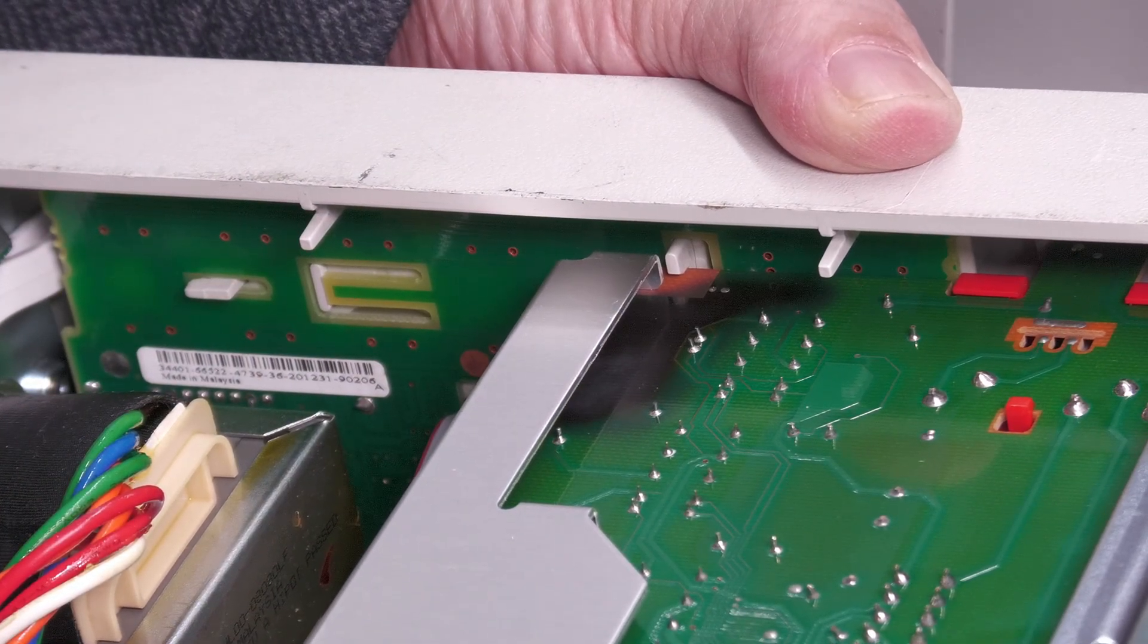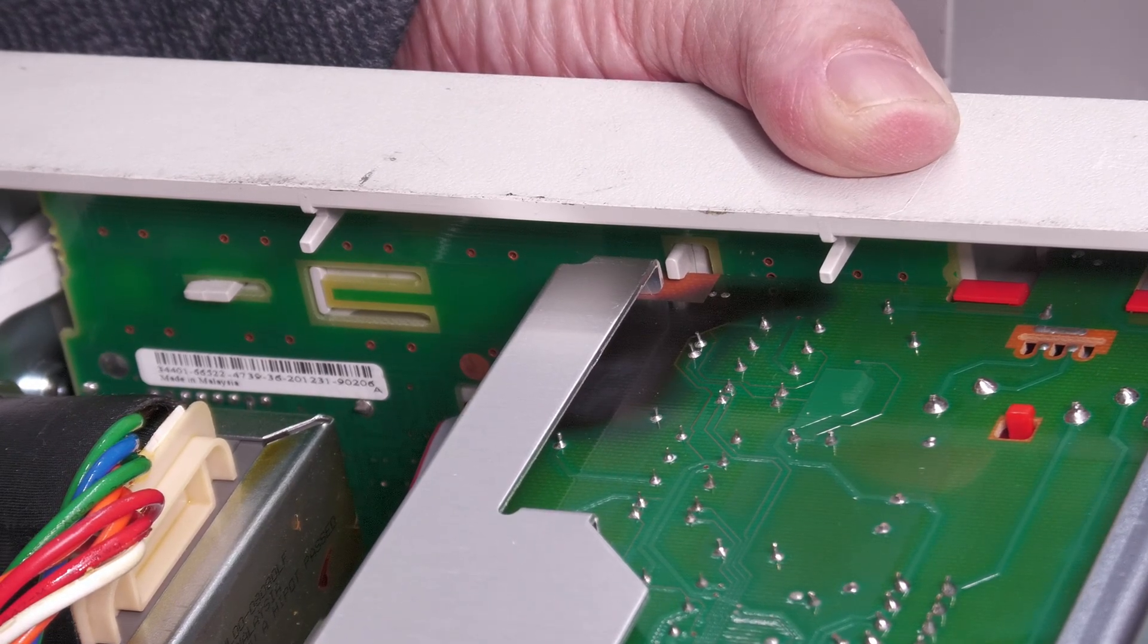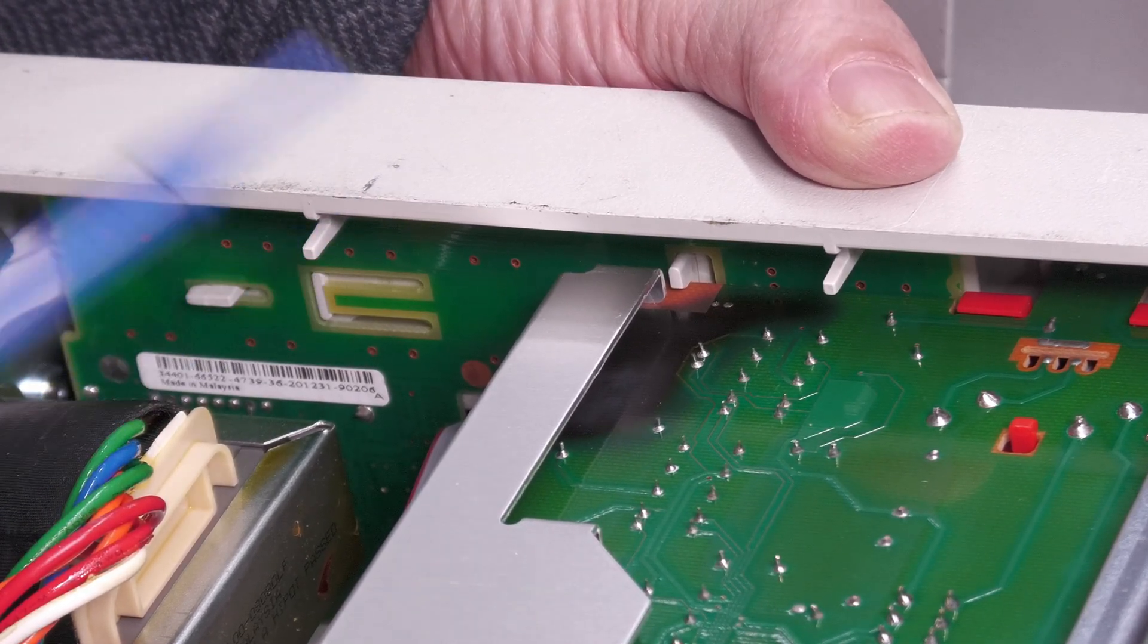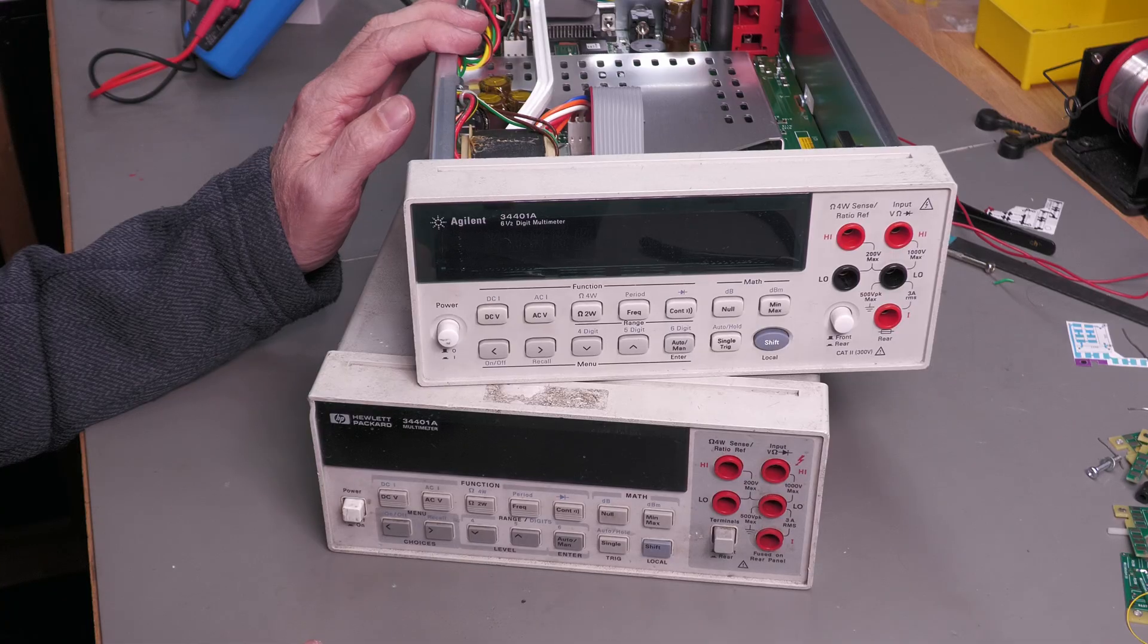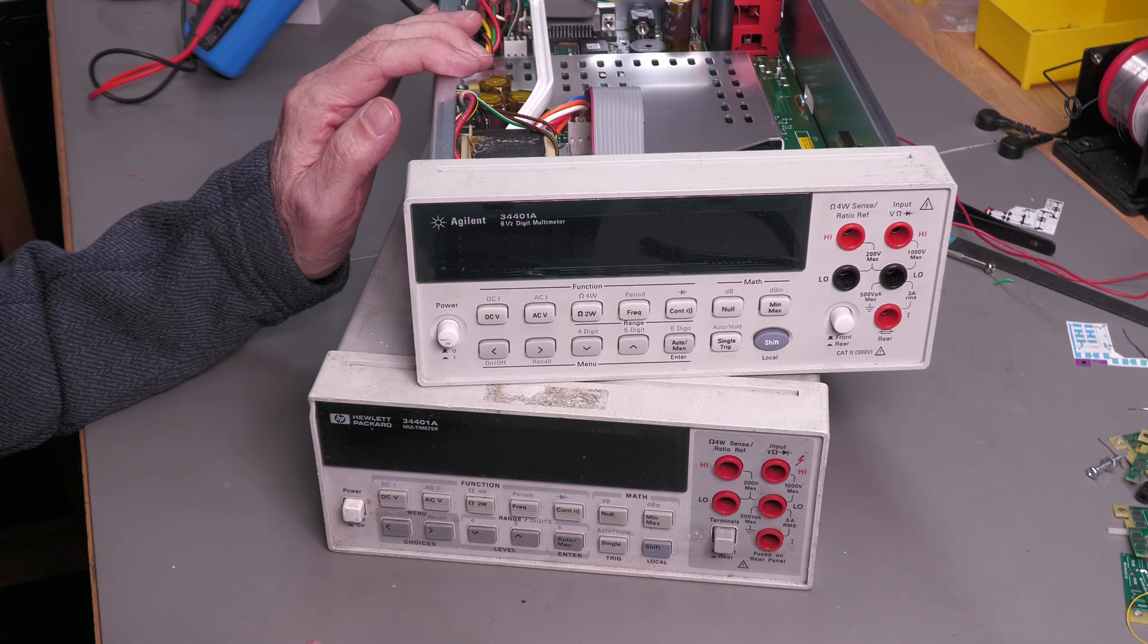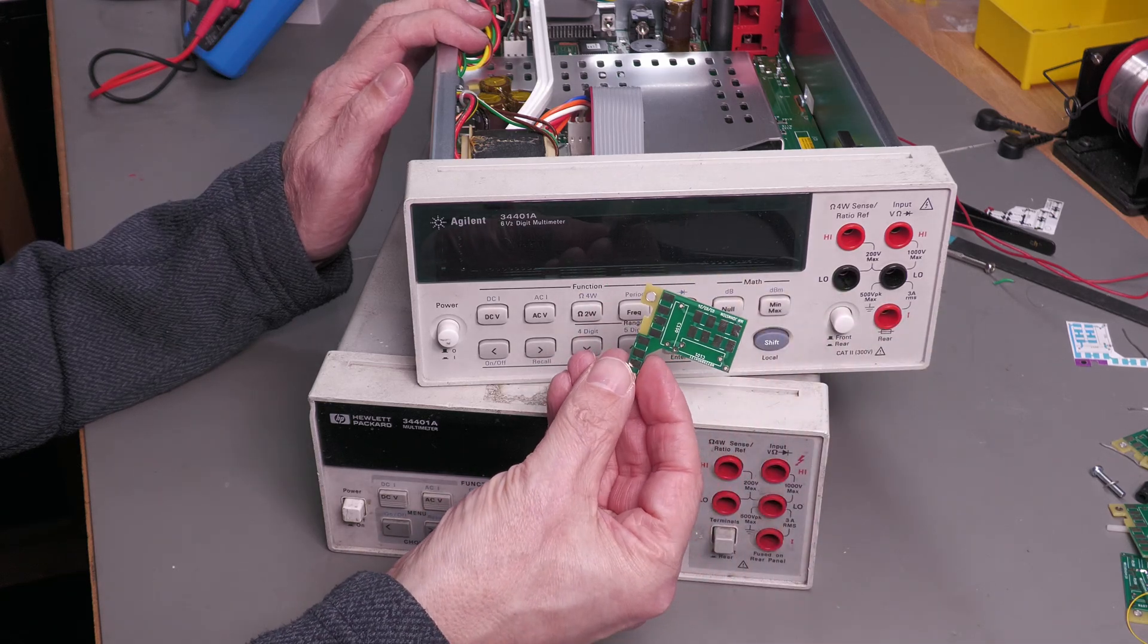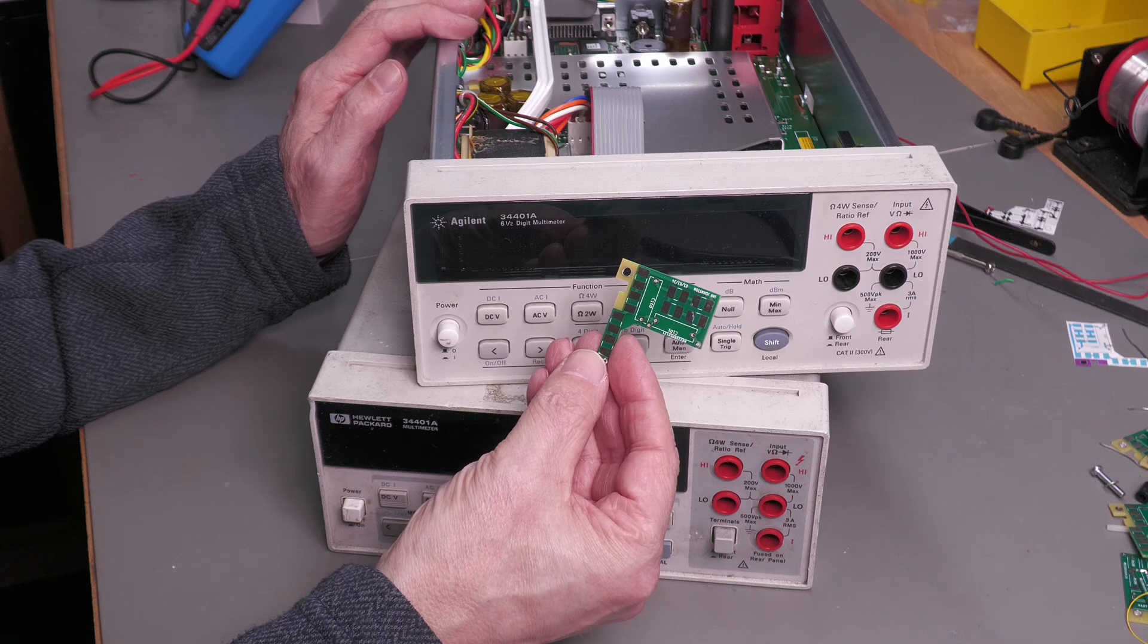Exactly the same fault. Well, not too surprising. These two 34401As came from the same place. So I wonder if the technician blew one of them up and then proceeded to blow the other one up as well. Wow. So I've got an identical fault with this second unit here. But I'm going to repair that one off camera. It's obviously going to be the identical process to what I did with the first unit. And luckily enough, I've got quite a number of these boards here and the components to go on them. So it should be a quick and easy repair as well.